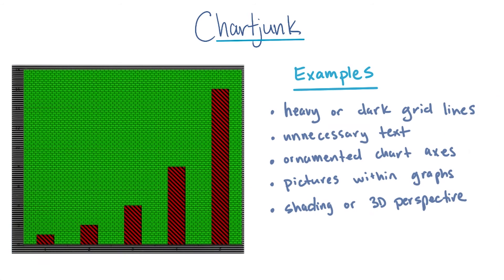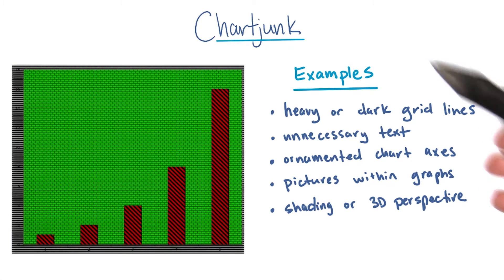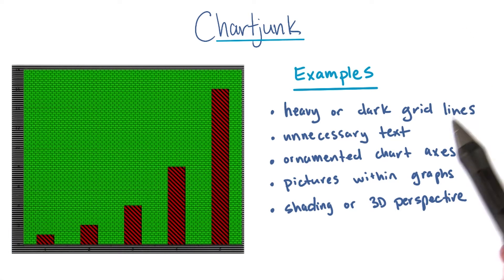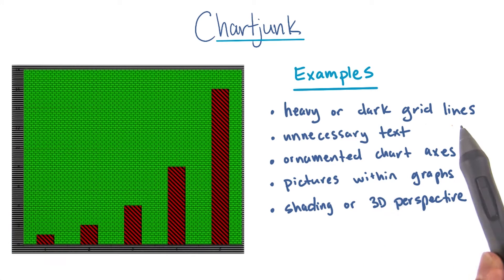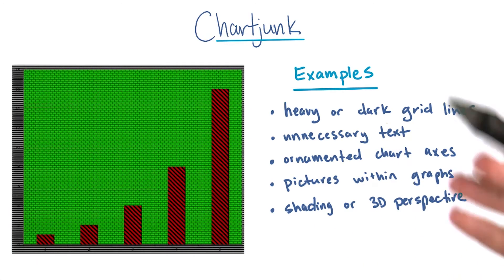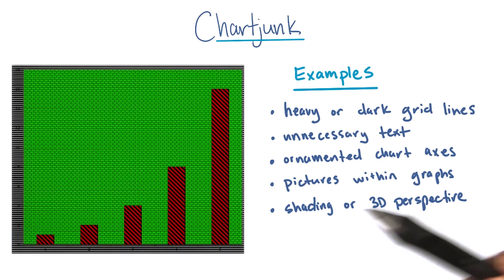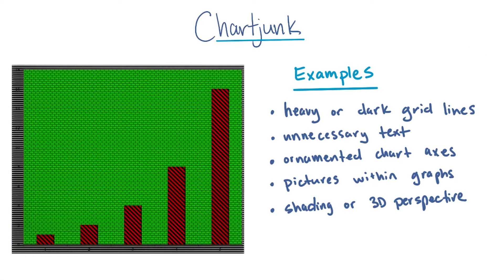Let's go through a few examples. Examples of unnecessary elements which might be called chart junk include the use of heavy or dark grid lines, unnecessary text or inappropriately complex font faces, ornamented chart axes or display frames, pictures or graphics within graphs, and the use of shading or 3D perspective.